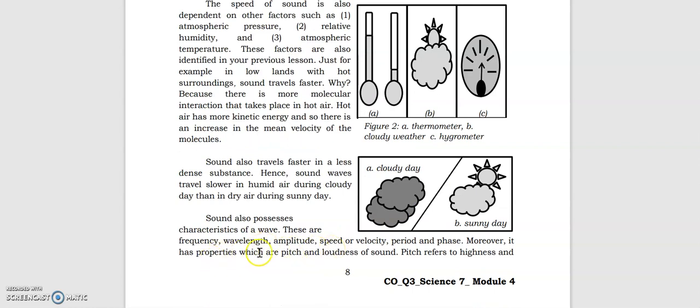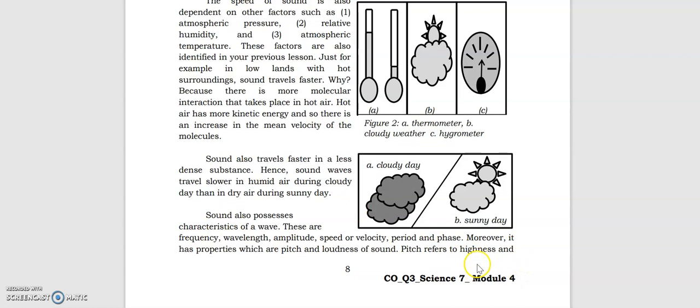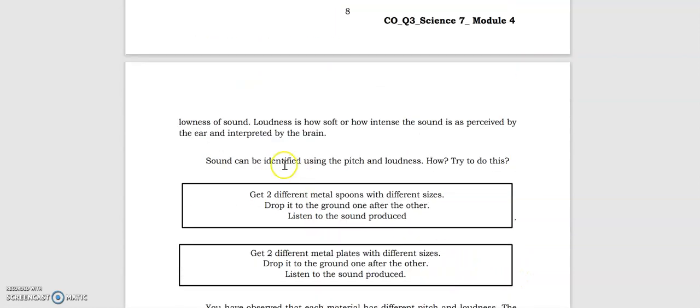We have here the frequency, wavelength, amplitude, speed or velocity, period, and phase, which are the characteristics of wave. Pitch refers to highness and lowness of sound. Loudness is how soft or how intense the sound is as perceived by the ear interpreted by the brain. So it's the difference between the two.